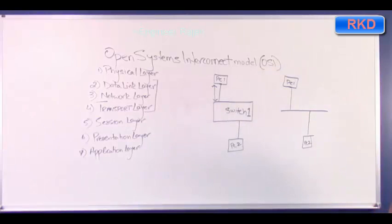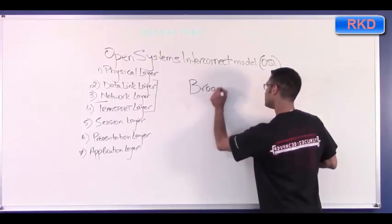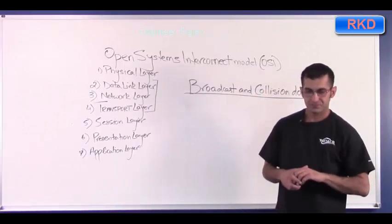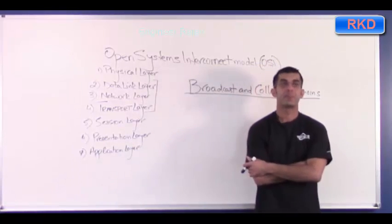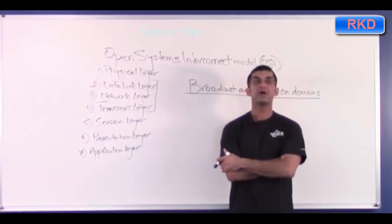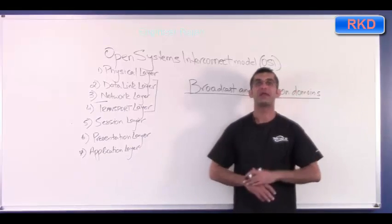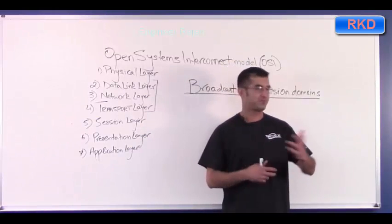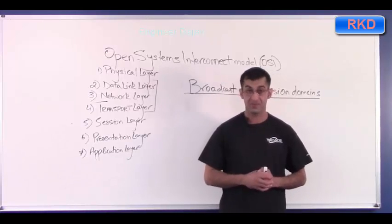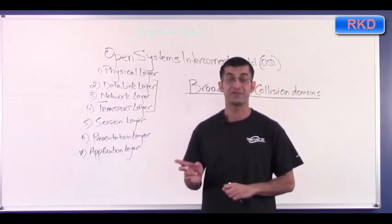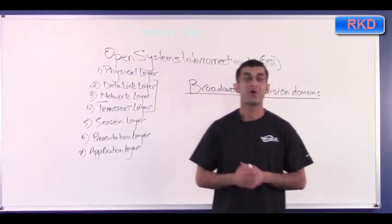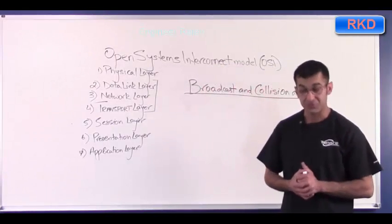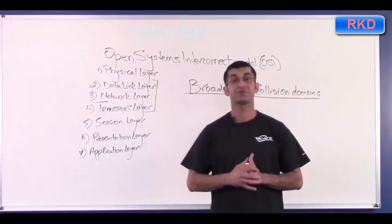Now we can move on to the concept of broadcast and collision domains. First, a broadcast domain: a broadcast domain is the area of a network where a broadcast will spread out to if sent by one device. So if you have a switch with a bunch of PCs connected and one PC sends out a broadcast frame — a frame with all F's in the destination — by default all Cisco switches are one broadcast domain.